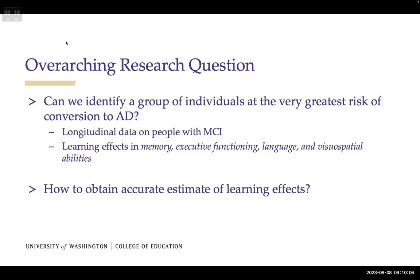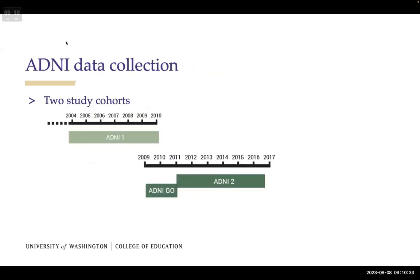Learning effects are quantified by the latent change score on the cognitive batteries. The psychometric question is: how do we obtain accurate estimates of learning effects? Everything is latent and we need to account for measurement errors. Change scores are notoriously problematic with measurement error because error aggregates over time, so we need to separate signal — the meaningful change — from noise, the measurement error.